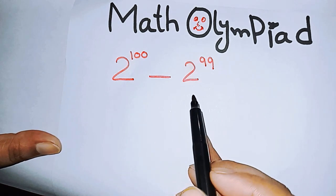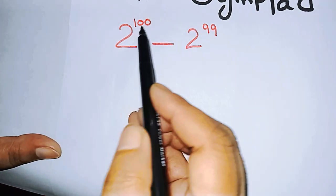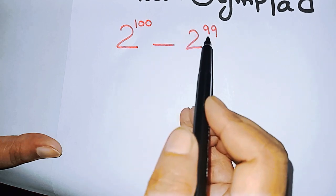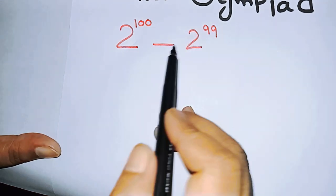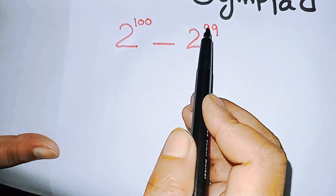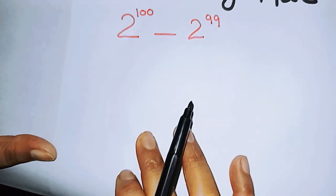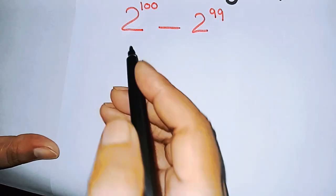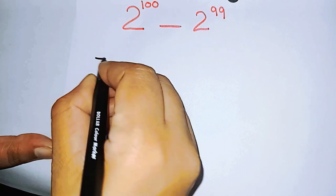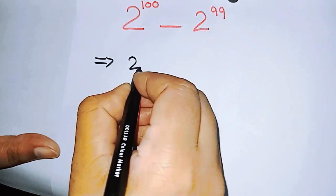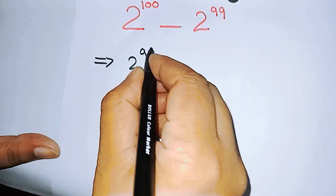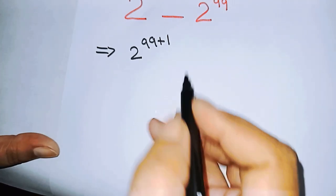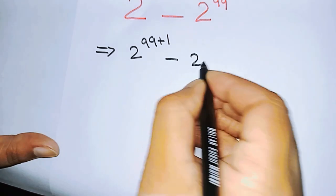Here you can see power of 100 minus 1 is equal to 99, and in plus into 99 is equal to 100. So we can write 2 to the power of 99 plus 1, and we are going to write that minus 2 to the power of 99.